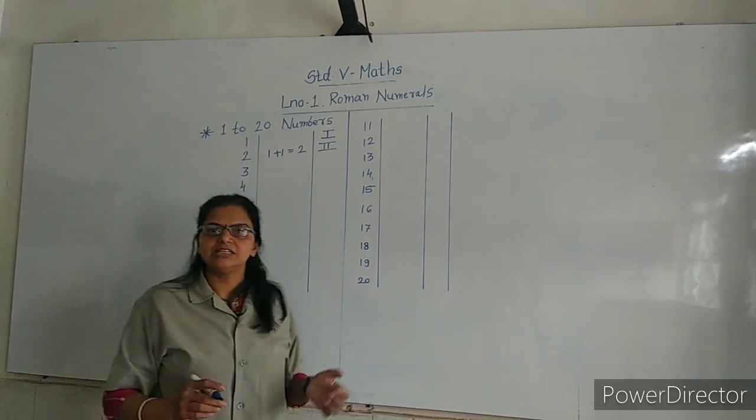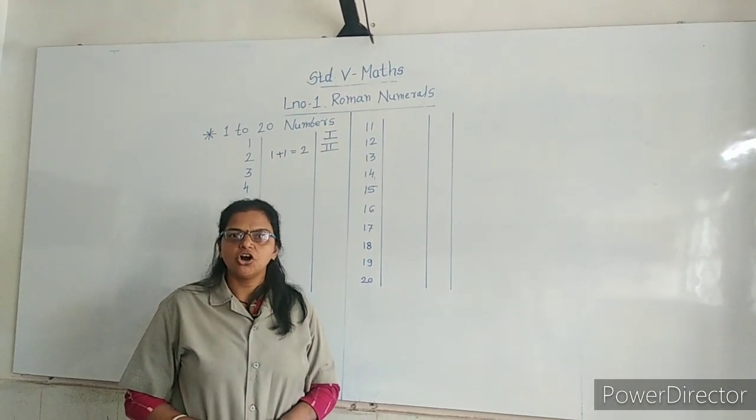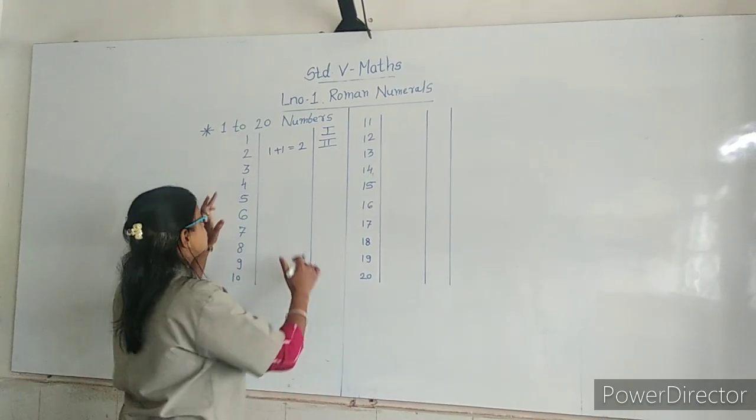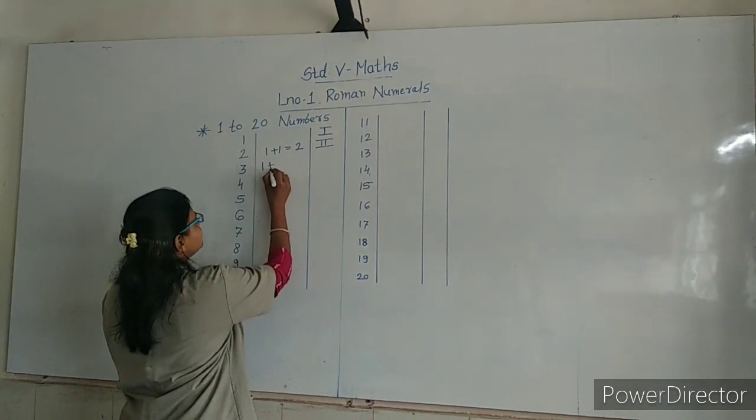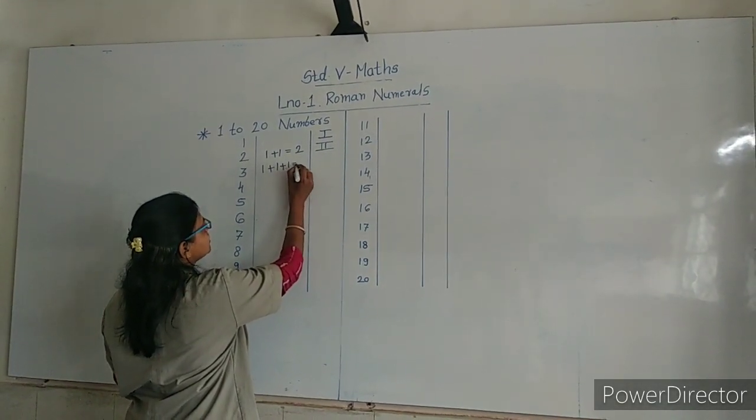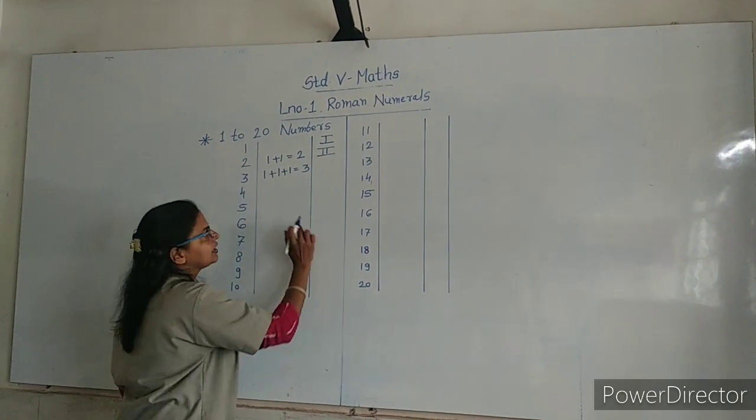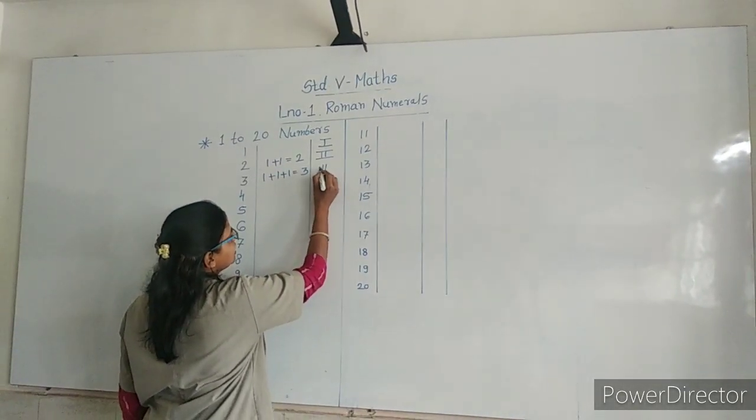We have seen that I can be repeated 2 times or 3 times. So, 3: 1 plus 1 plus 1 is equal to 3. 3 is triple I (III).